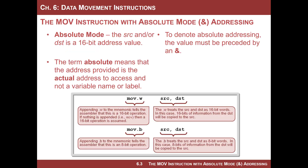We're now going to start accessing memory, specifically data memory. Absolute means you are going to provide the hard-coded address of where you're going to grab information and where you're going to put information. It's not used a bunch — you'll see why — but you have to actually know what the address is. You have to know by looking at the data sheet that data memory starts at 0x2000, and if you're going to put it into another location in memory, you have to know the exact address of where it's going to go.